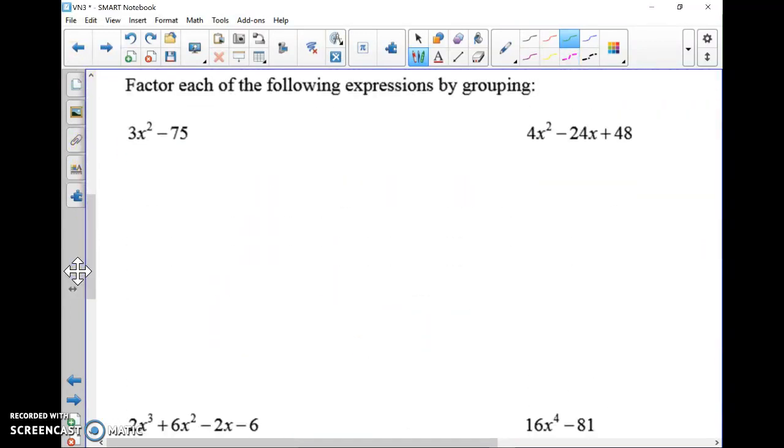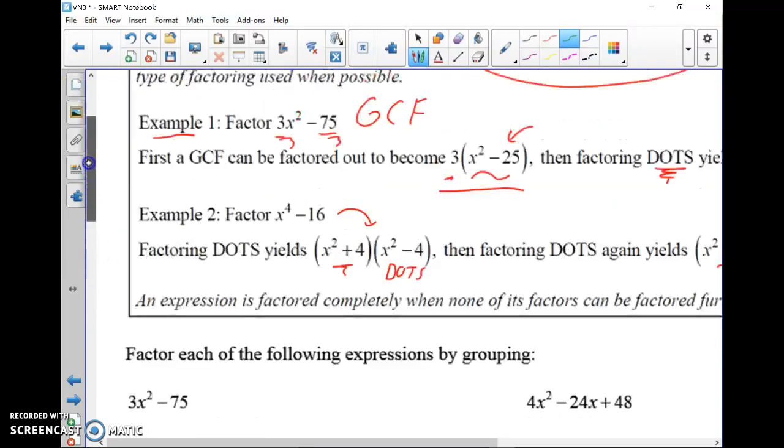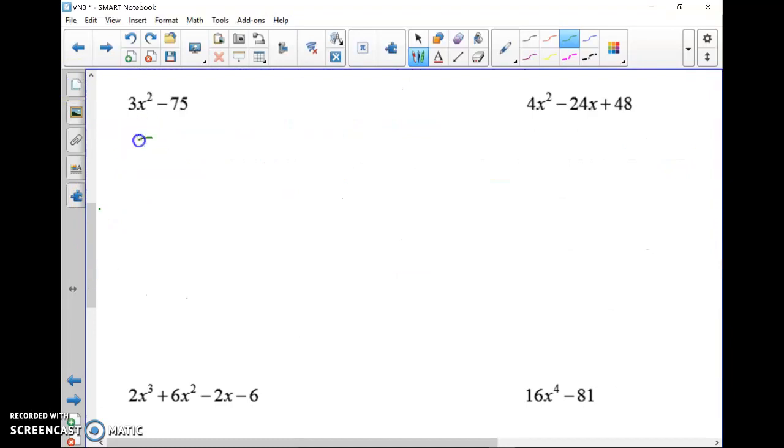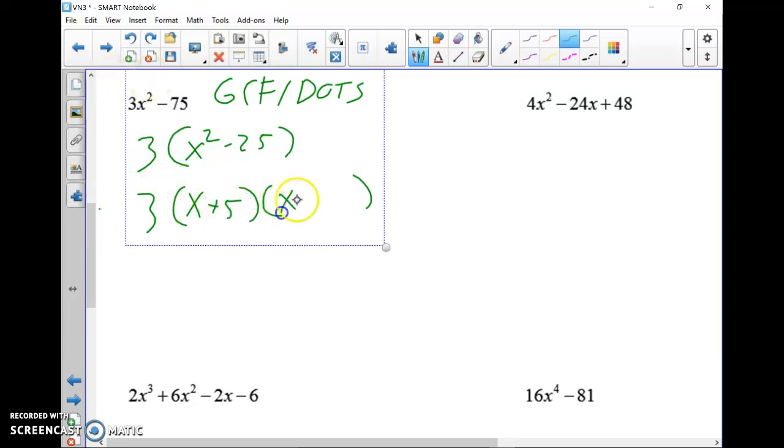So 3x² - 75. I think this is actually the same exact question that we have right here. I'll do it again real quick. We take out the 3. This is a GCF slash DOTS combo. We take out the 3, and that's x² - 25. Don't forget, when you factor the DOTS to keep the GCF 3 out front. Sometimes people will drop that and just say the answer is x + 5, x - 5. But the whole answer is with the GCF there. That doesn't go away.